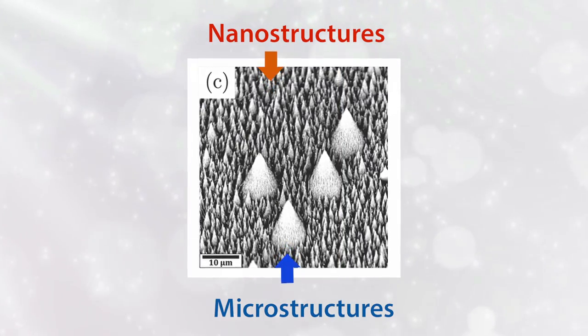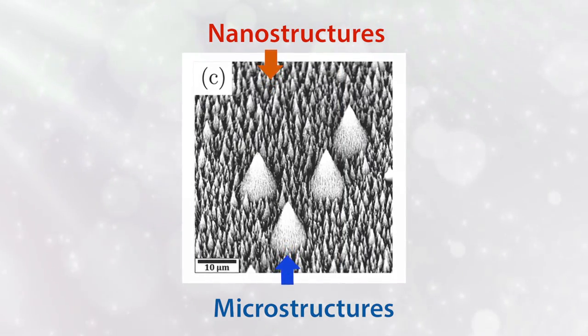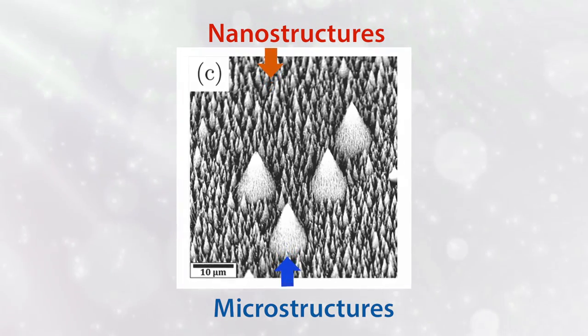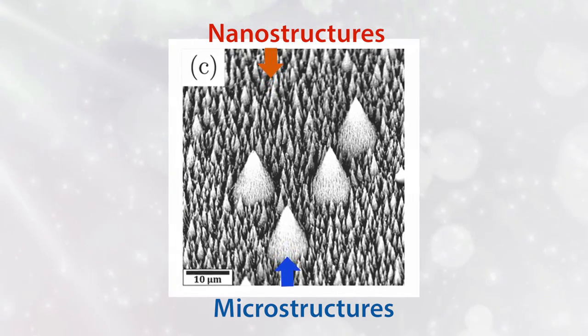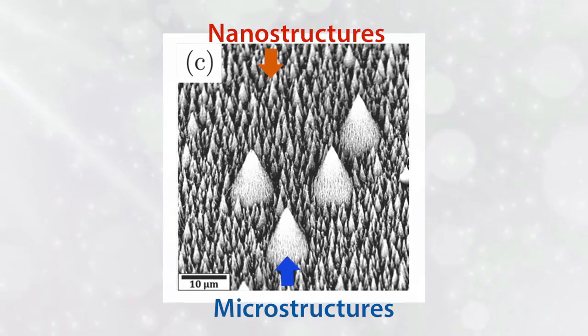Superhydrophobic materials are often made by coating surfaces with nanostructures, which can be shored up by adding microstructures to the mix. But most of the prototypes so far haven't been sturdy enough to stand up to scratches from sharp objects.